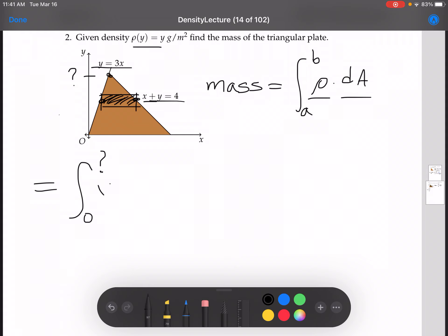Now rho is given to us in terms of y, so that'll work. We'll plug rho in. We have y times the length of our arbitrary rectangle times the width. And the width will be dy.